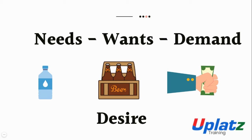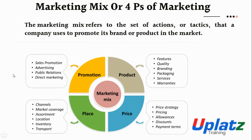The world is diverse and every human being has different needs as well as different income to fulfill them. Everyone has a different paying capacity. So the next framework is called the marketing mix, or the four Ps of marketing. It helps us understand how companies create products and take them to market, where demands are different and paying capacity is also different.